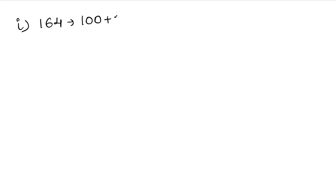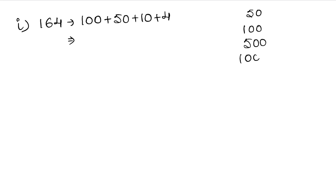How do we write 164? We can write it as 100 plus 50 plus 10 plus 4. Now, let's recall the Roman numeral values: 50 is L, 100 is C, 500 is D, and 1000 is M.